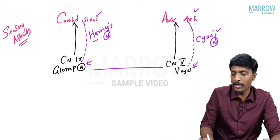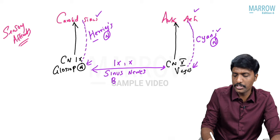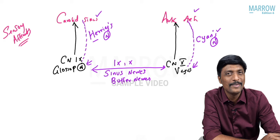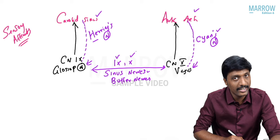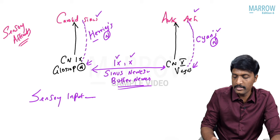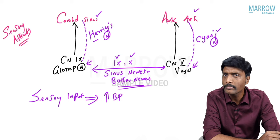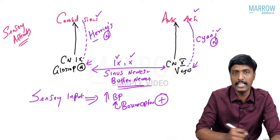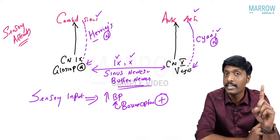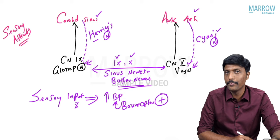The special branch of vagus innervating the aortic arch is called Cyon's nerve. Together, these two important cranial nerves — 9 and 10 — innervate our sinuses, so they are called sinus nerves. They buffer changes in blood pressure, so they are also called buffer nerves. These baroreceptors are always activated only by increase in blood pressure, and they convey this sensory input to the center through the glossopharyngeal and vagus nerves.